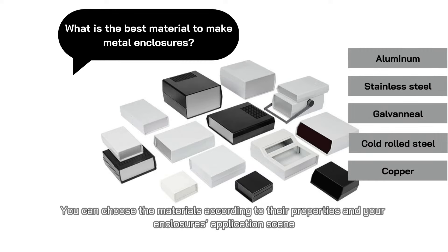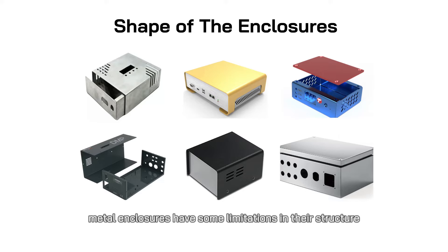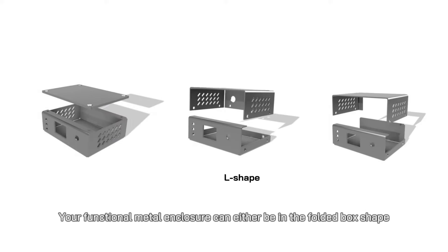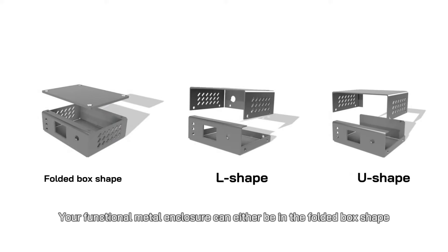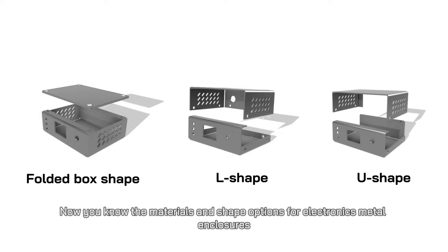After selecting the material, the next step is to decide the shape of the enclosures. Compared with plastic molding enclosures, metal enclosures have some limitations in their structure. Your functional metal enclosure can either be in the folded box shape, L-shape, or U-shape. Now you know the materials and shape options for electronics metal enclosures — let's learn some design tips.